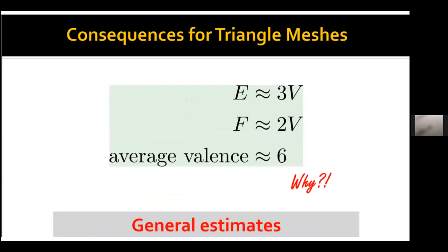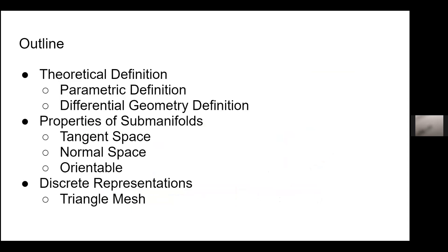That's basically all I have for today. To wrap up: I introduced the definition for surfaces and submanifolds — recall that submanifolds are a generalization of surfaces. I discussed properties including tangent space, normal space, and orientation. Finally, I showed how to consider discretized representations of surfaces using triangle meshes, and if you're interested, you might try using graph neural networks on problems involving triangle meshes.